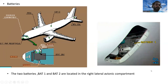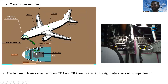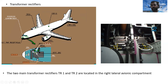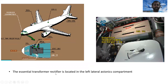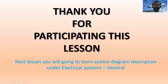The two main transformer rectifiers, TR1 and TR2, are located in the right lateral avionics compartment — you can see TR1 and TR2 here. The essential transformer rectifier is located in the left lateral avionics compartment.